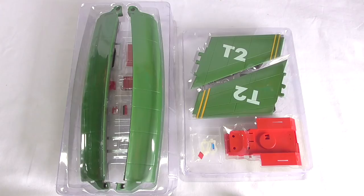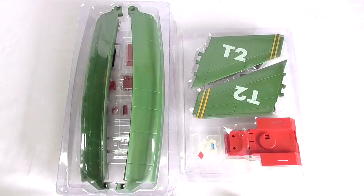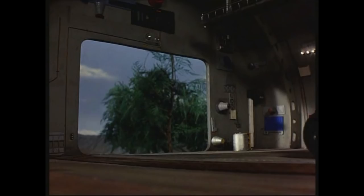But before we do all that, Thunderbird 2. Let's first look at the pod vehicle and then we'll look at the main mothership herself. Okay, so here we have the parts to make the final pod vehicle in this series, and this pod vehicle is the mobile crane from Path of Destruction.